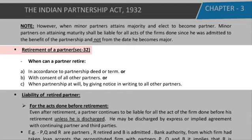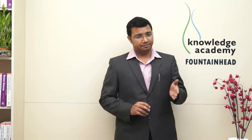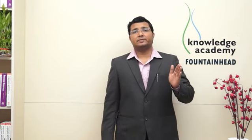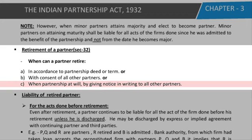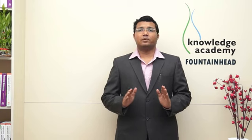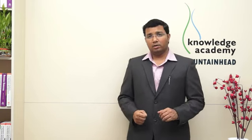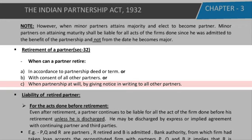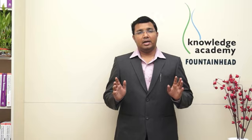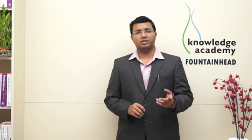Section 32 — Retirement. When can a partner retire? First, in accordance with the partnership deed — if the deed states that a partner will retire after 5 years, he retires at the end of 5 years. Second, with the consent of all other partners. Third, when partnership is at will — meaning no end date was set — the partner has to give it in writing to all partners that he wishes to discontinue. Those are the three situations.